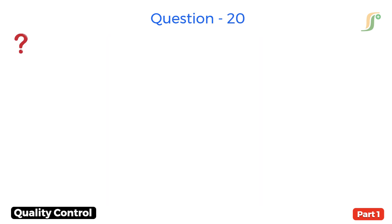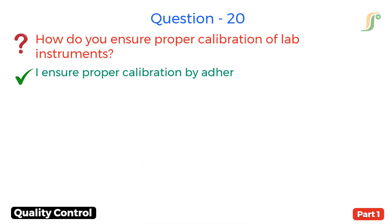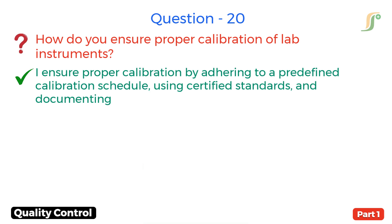Question 20. How do you ensure proper calibration of lab instruments? Answer. I ensure proper calibration by adhering to a predefined calibration schedule, using certified standards, and documenting calibration results.